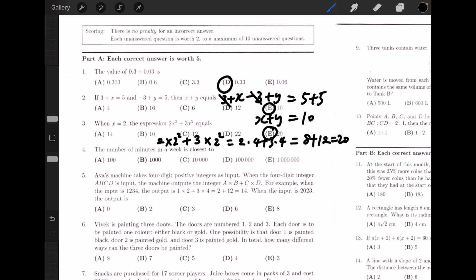Number 4, the number of minutes in a week is closest to, since there are 24 hours in a day and 60 minutes in an hour and 7 days in a week, the total minutes in a week should be 24 times 60 times 7, which gives us 10,080. And this is closest to C.